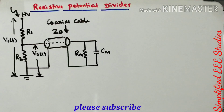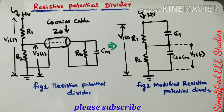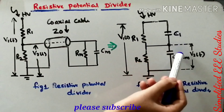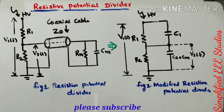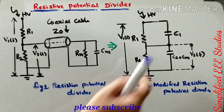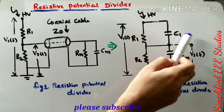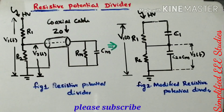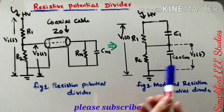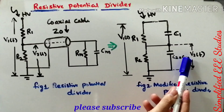To protect your dividers from flashover voltage, you can use voltage-controlled capacitors C1 and C2. You have to connect capacitors C1 and C2 in parallel to R1 and R2 respectively. Sudden switching action causes flashover voltage that damages the divider, so to protect it you use voltage-controlled capacitors C1 and C2. The value of C2 should be approximately equal to the meter capacitance.